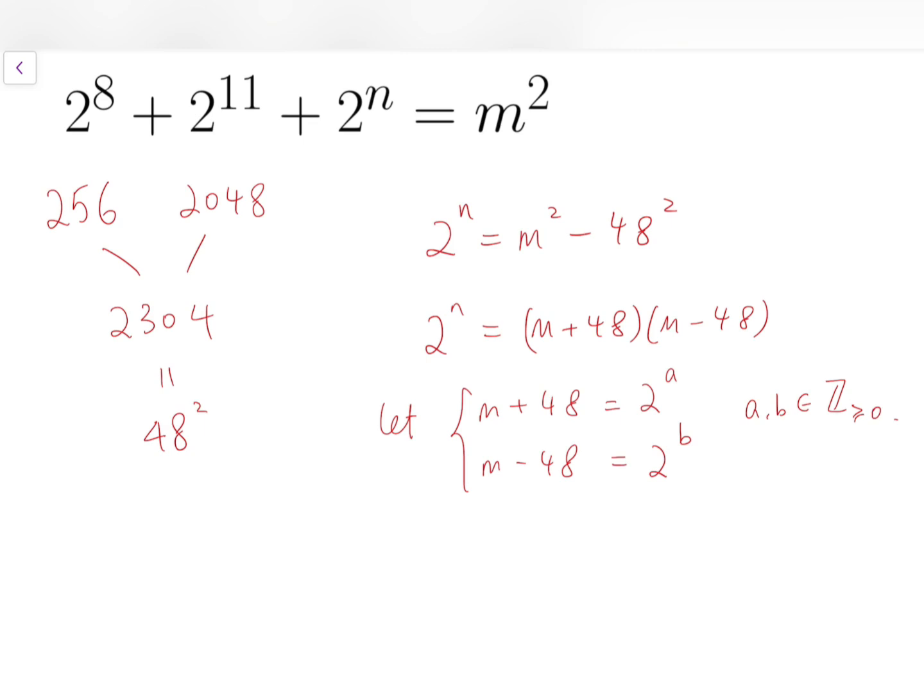Of course, we'll soon find out that if one of them is 1, then the other cannot be a power of 2. So actually, a and b should be positive integers.